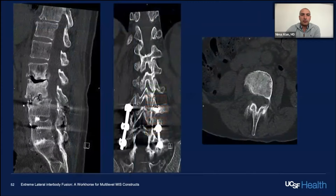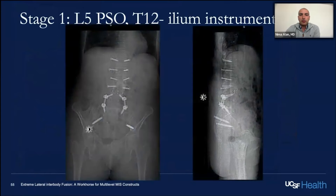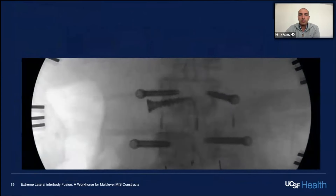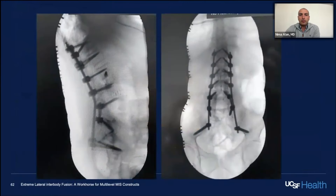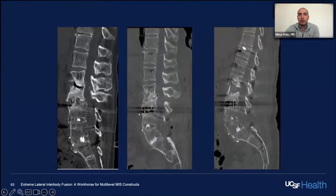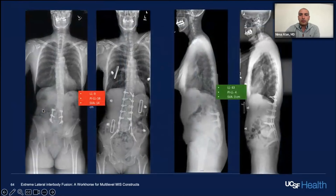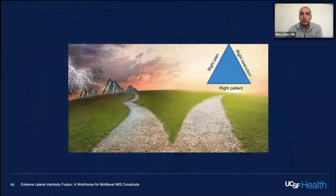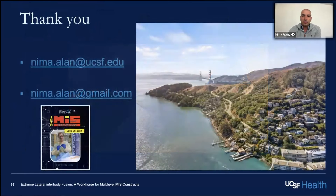Case three: a fixed deformity at L5-S1 requiring a PSO at the bottom, but there is also a vacuum phenomenon higher up. This is where you can combine a PSO at the bottom with an ACR above to create a harmonious correction in lordosis. I would not do ACR alone here — that would be a recipe for proximal junctional kyphosis if you don't correct at the bottom. Quick conclusion: if you select the right patient, plan the surgery carefully, and execute it expertly, you will have success with multi-level lateral MIS constructs.